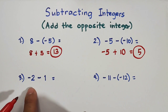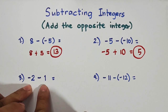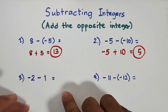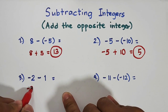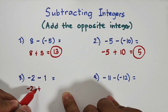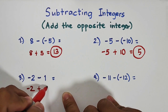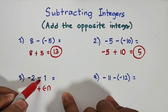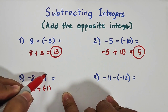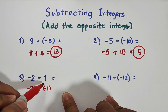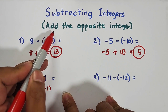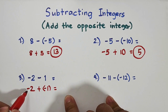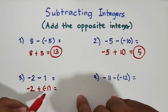In number three, we have negative 2 minus 1. Again, add the opposite integer — copy negative 2, then add negative 1. We change the operation to addition, and the opposite of positive 1 is negative 1. So we now have negative 2 plus negative 1, which gives us negative 3.